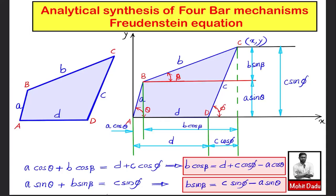In the last video we had a discussion on the kinematic synthesis of mechanisms and its types. Synthesis means simply the design of mechanisms or finding the relative length of the links. We can do synthesis in two ways: one is by analytical method and the other by graphical method. In this video we will be studying analytical synthesis for a four-bar mechanism using the Freudenstein equation.